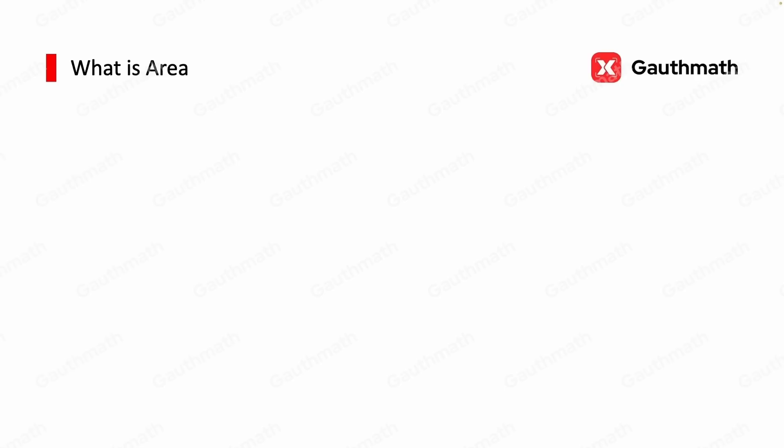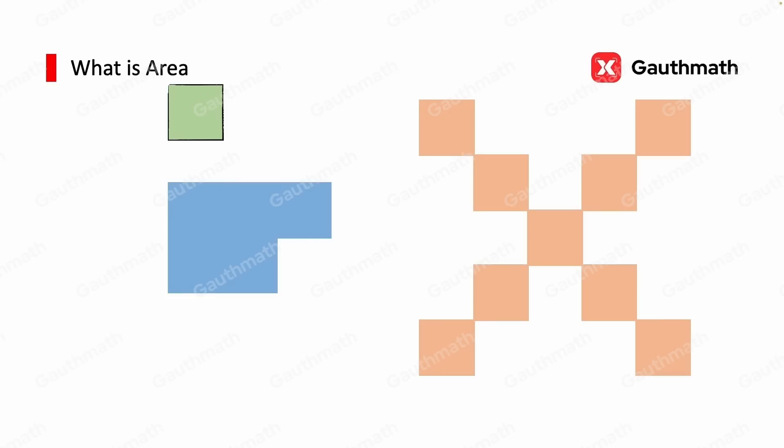Well, what is area? Let's take a look at this simple example. We can't tell which figure occupied the larger space straight away, so we introduce the unit area. It's a square with length of 1 unit. We call it a unit square.